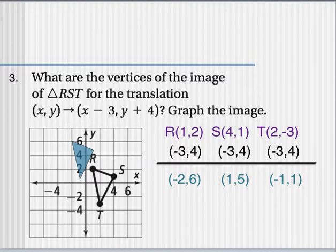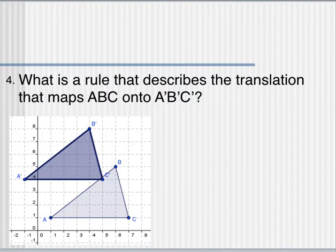Now sometimes they'll ask you to work backwards. They'll give you a pre-image and an image, and they'll ask you what rule was used here. Like question 4, what is a rule that describes the translation or the slide that maps triangle ABC onto triangle A prime B prime C prime? Alright, so the one without the primes, that's original. So if we take one corner, and we see what direction it slid to go to its new version. It slid 2 left, so that's negative 2 over the x-axis, and 3 up, that's plus 3 over the y-axis.